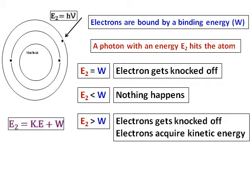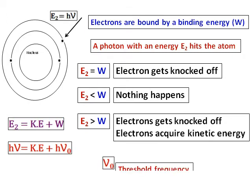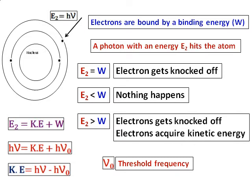And you know that E2 as we have defined as h nu, E2 is h nu and W which is also an energy can be defined as h nu 0 where nu 0 we call it as the threshold frequency. And rearranging it, we can get that kinetic energy is equal to h nu minus h nu 0. This is an important equation and we will be doing a lot of questions based on this.